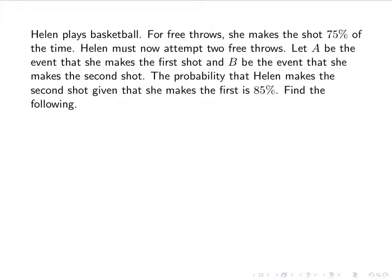Let's find the following. The probability of A is given: it's 0.75. The probability of B is also 0.75, because she makes 75% of all her free throws. The probability of B given A — the probability she makes the second shot given she makes the first — is also given: it is 0.85.